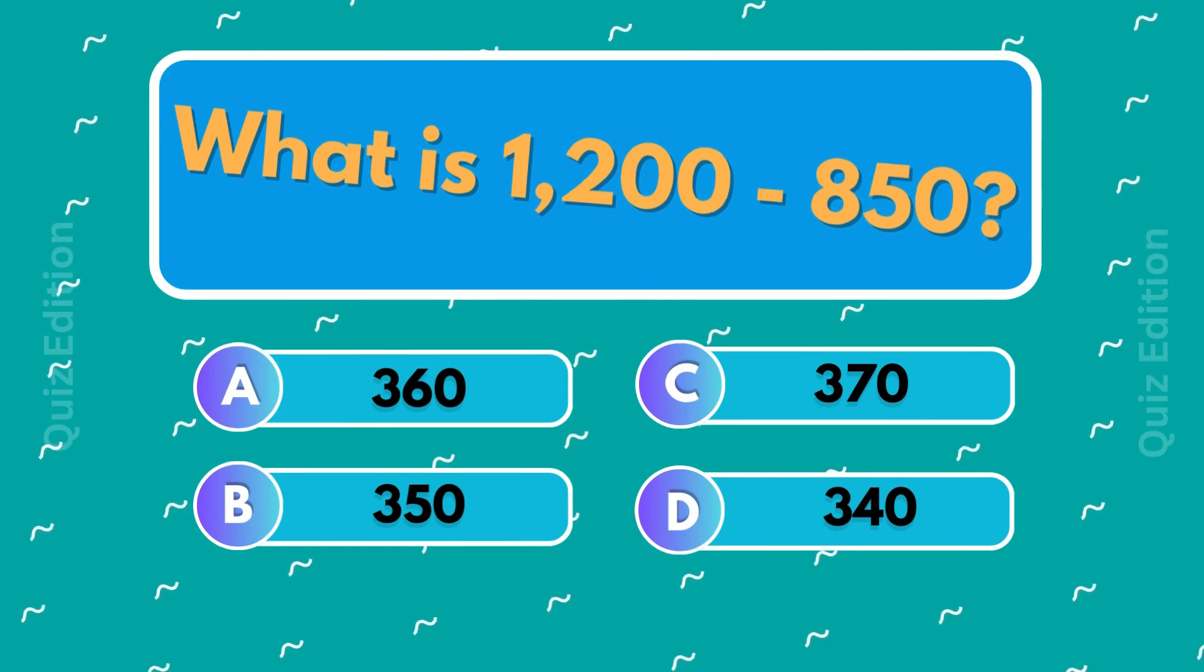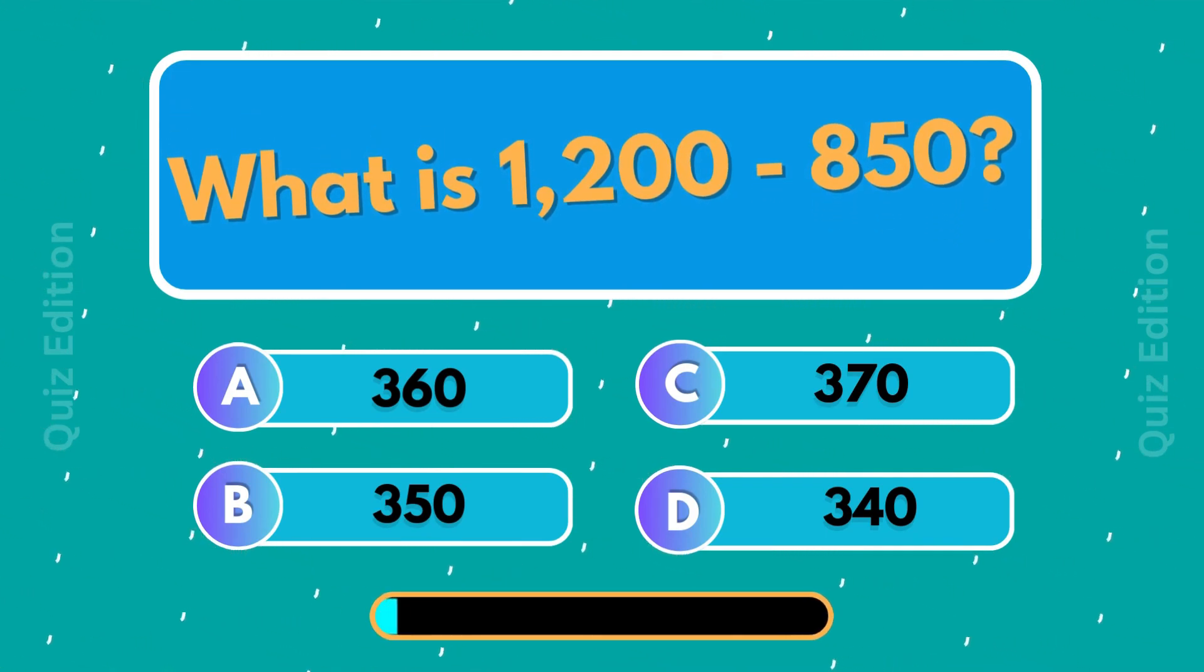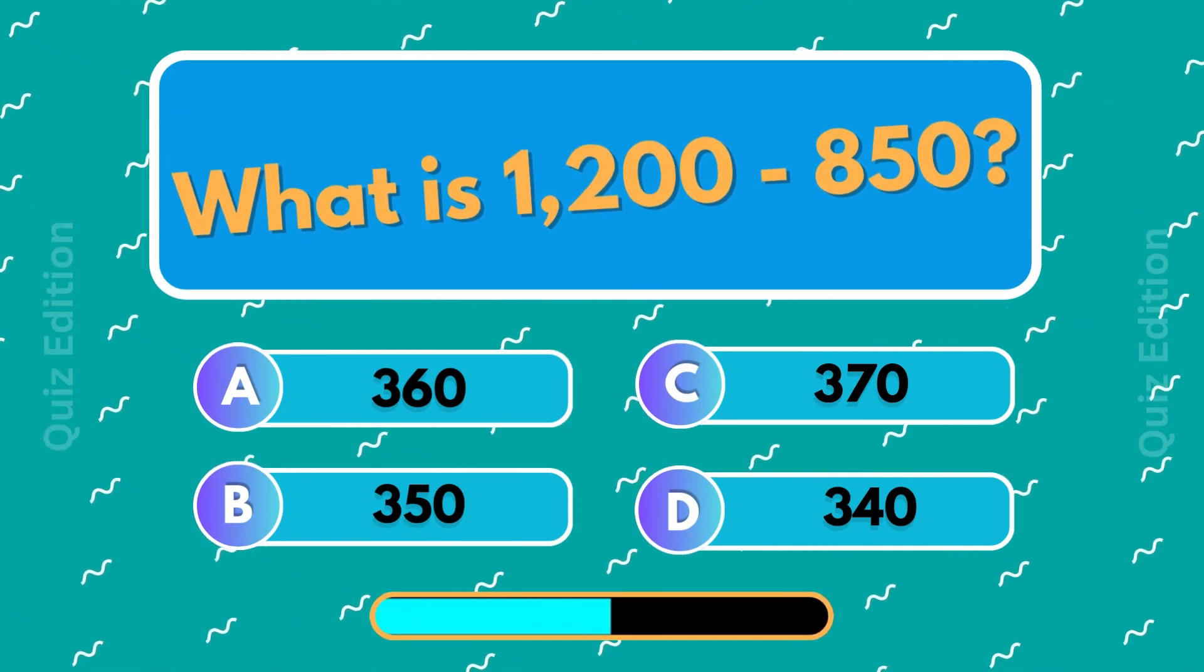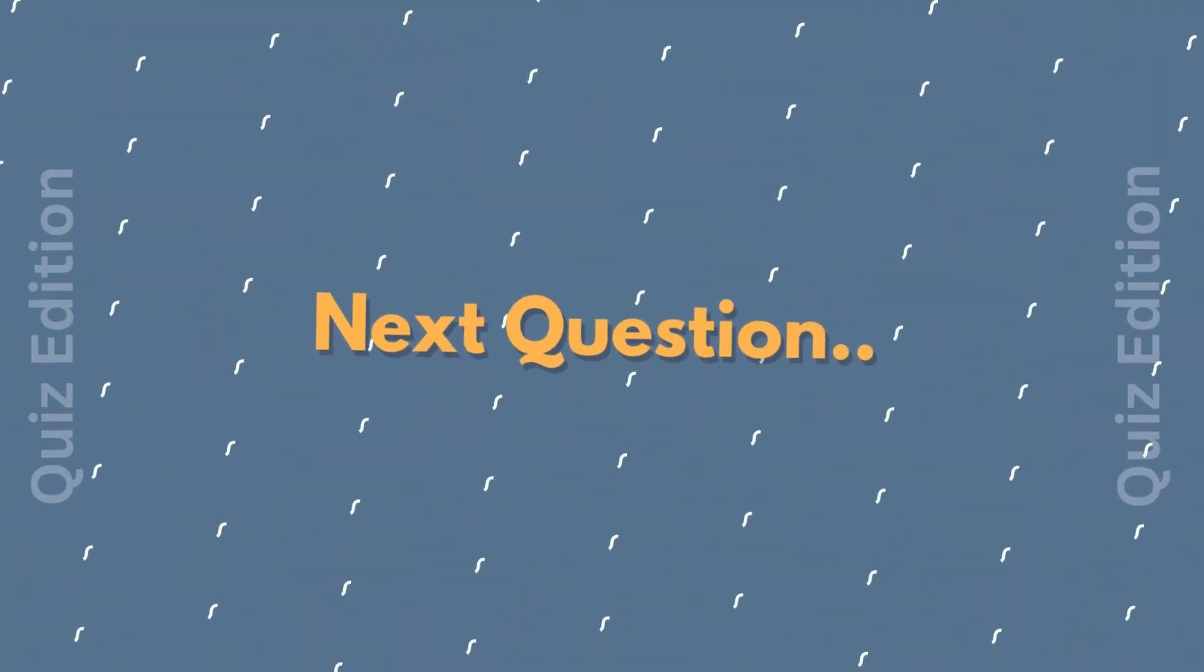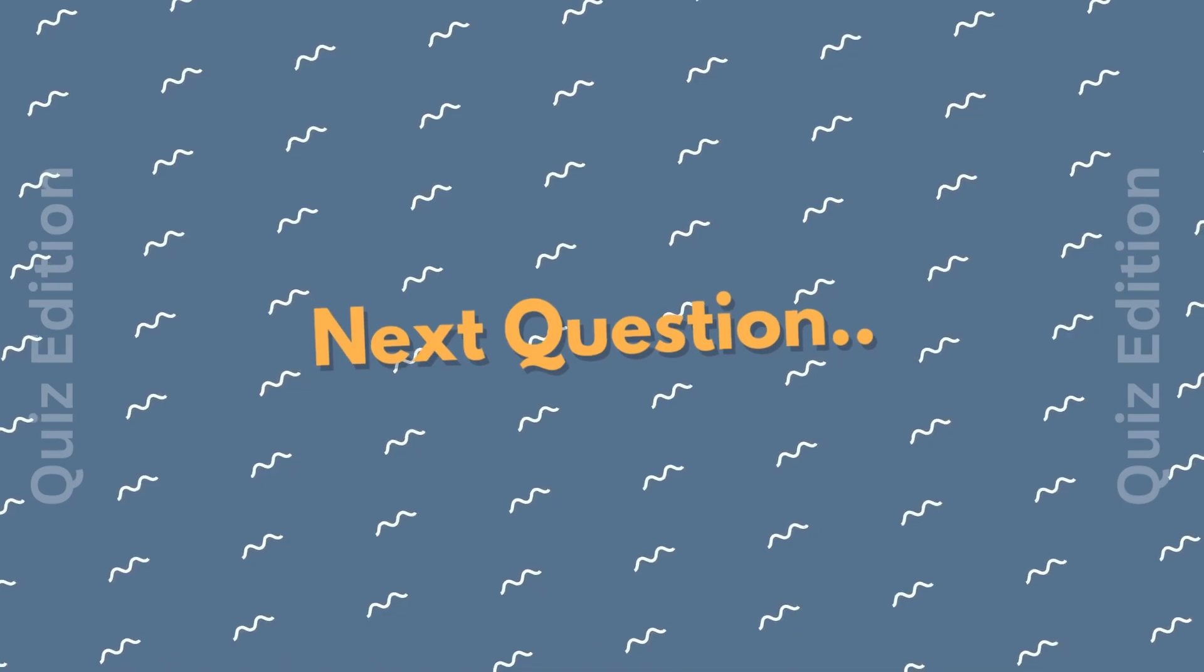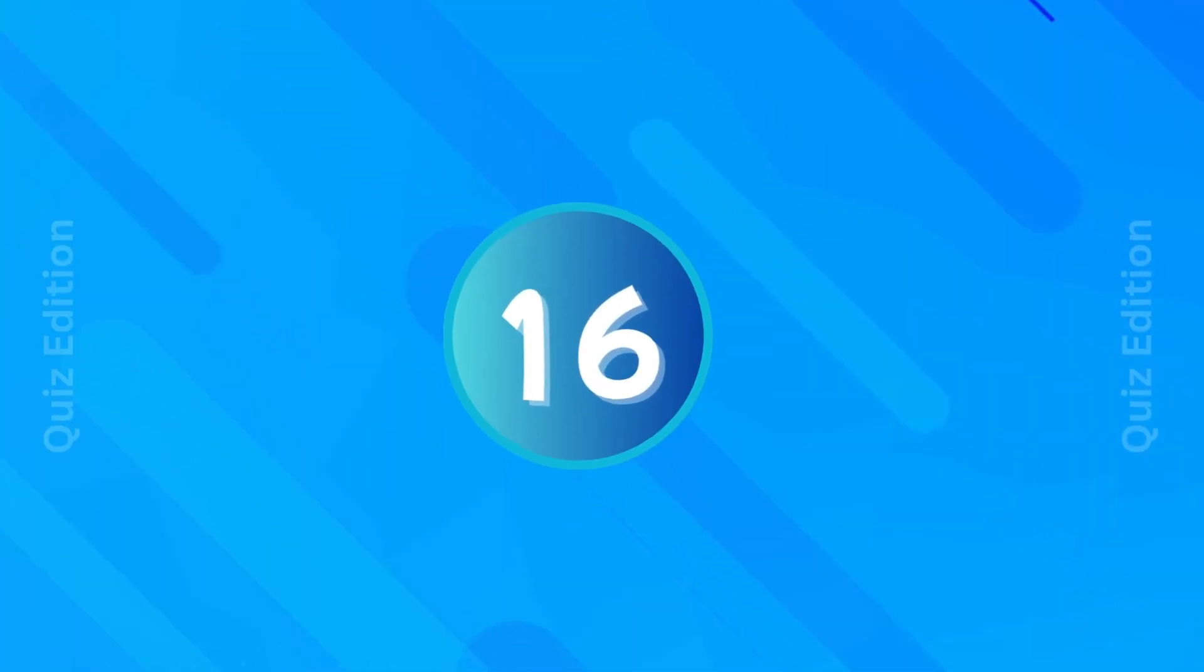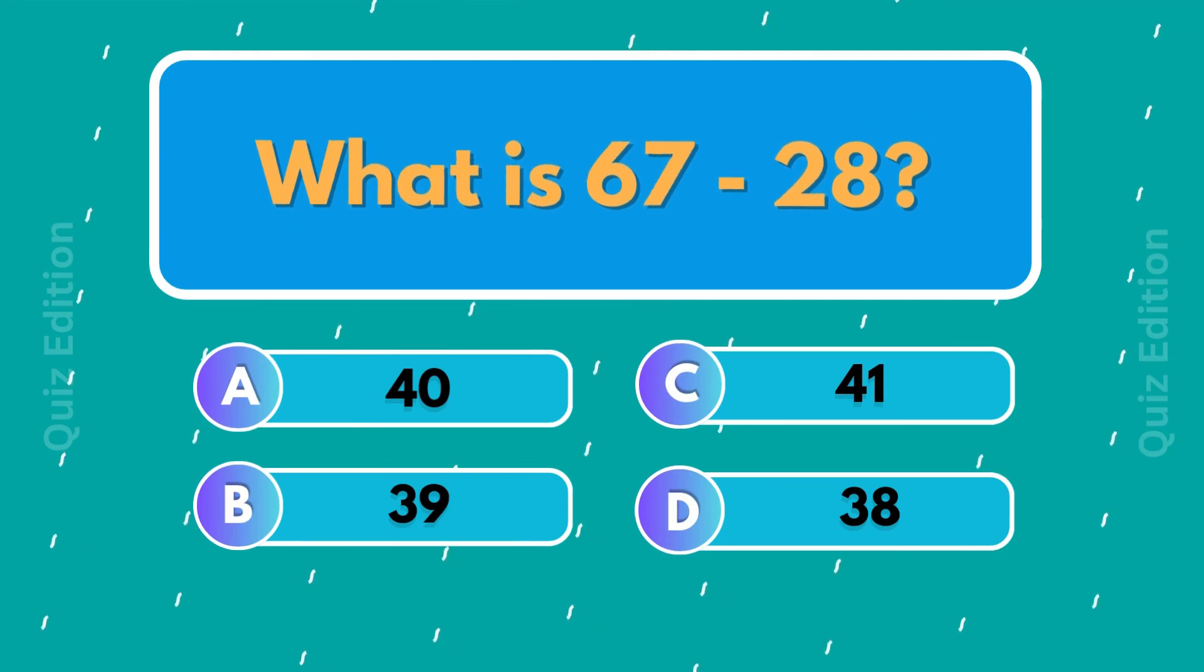What is 1,200 minus 850? 350. What is 67 minus 28? 39.